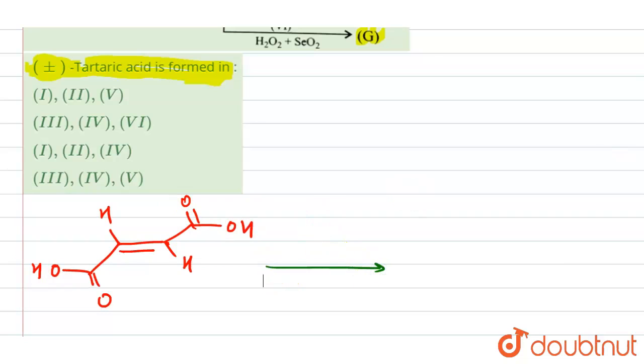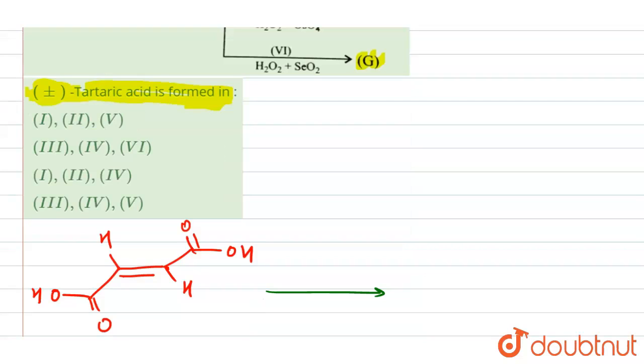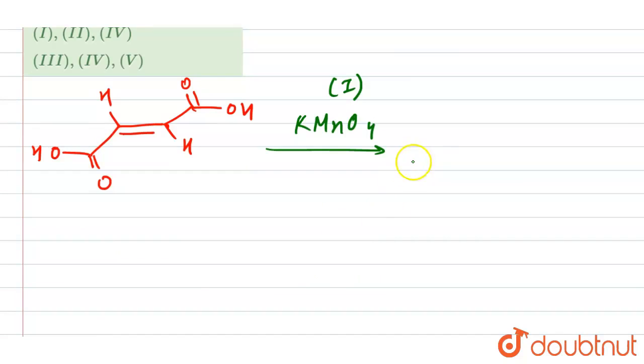When this reacts with the first reagent, which is KMnO4, then here we have, this is our first, and B will be formed. So here we have the formation of plus-minus tartaric acid.